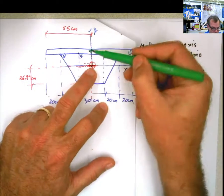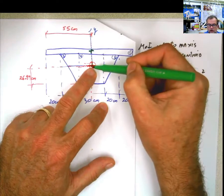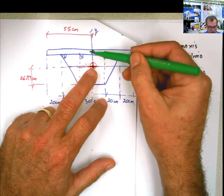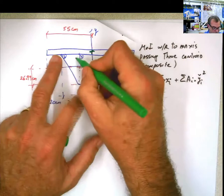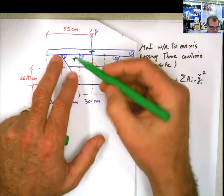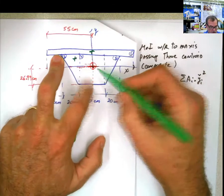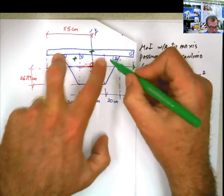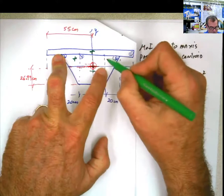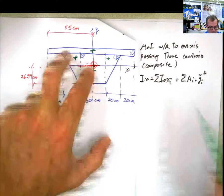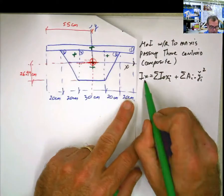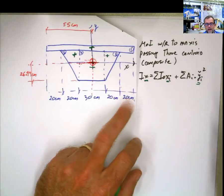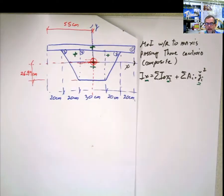That distance squared is the distance between the centroid of each individual figure and the center of the composite figure. For example, for figure 1, the center of figure 1 is here, and the centroid of the composite figure is here, so the distance goes from here to here. Similarly for figures 2, 3, and 4. Be aware that when you work in the x direction, that distance has to be measured in the y direction, related to the integral of y squared dA.